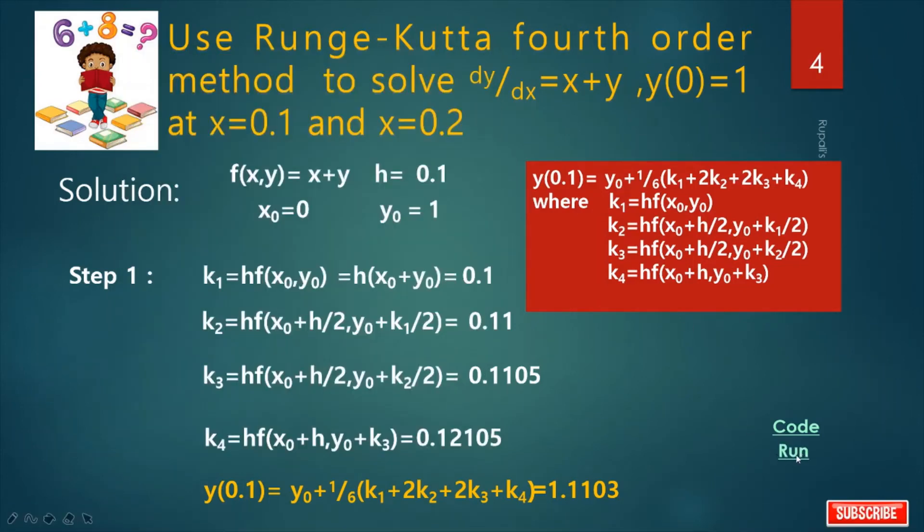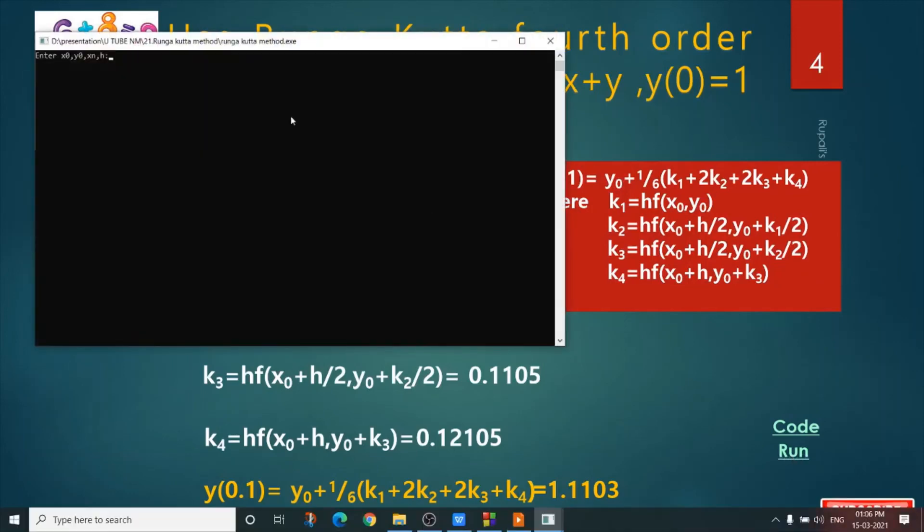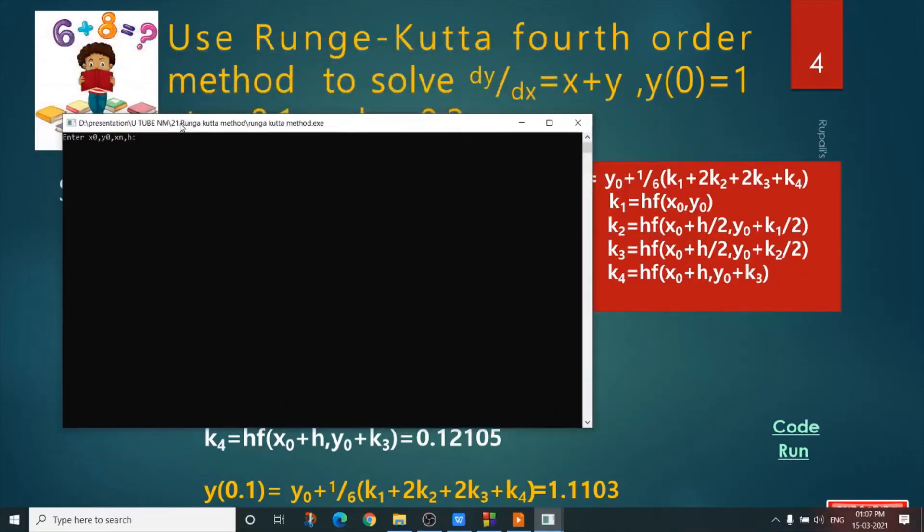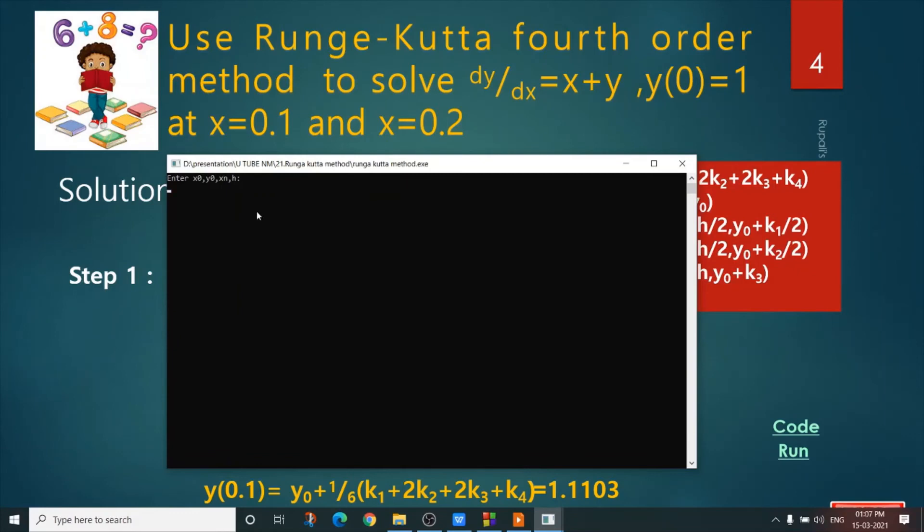When we run our program, enter the value of x0, y0, xn, and h. What is x0? It is 0. What is y0? It is 1. What is xn? It is 0.2. What is h? It is 0.1. When the value of x is 0.1, value of y, that is y(0.1), is 1.1103 and y(0.2) is 1.2428.